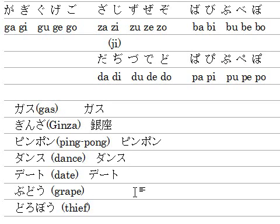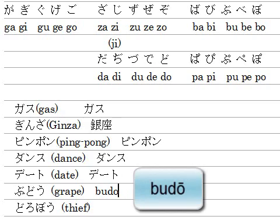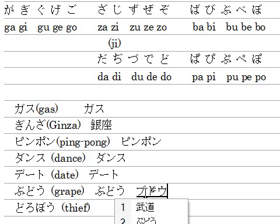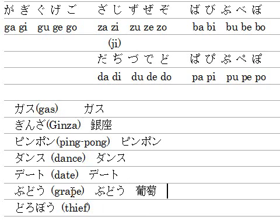The next word is BUDOU, meaning 'grape'. BUDOU has a long vowel. Type B-U-D-O-U — the O-U combination creates a long vowel, so you may see a macron over the O. Normally type D-O-O to represent it. In hiragana, it's B-U-D-O and U. You can also find the kanji for BUDOU — grape — like this.